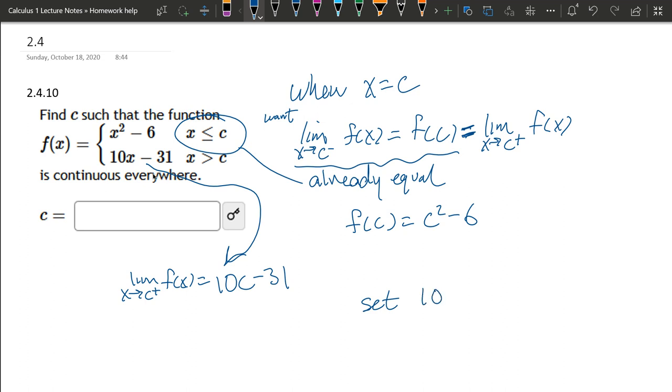So we're going to set 10c minus 31 equal to c squared minus 6 and solve for c. I like my square term to be positive, so we'll subtract everything to the right side. So I need 0 equals c squared minus 10c plus 31 minus 6, which is plus 25.